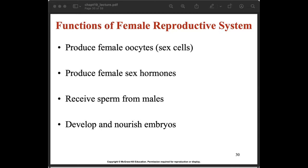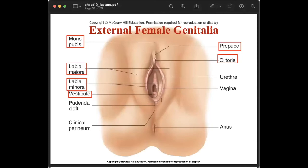The functions of the female reproductive system are: to produce female oocytes or sex cells, to produce female sex hormones, to receive sperm from males, and to develop and nourish embryos. Do not be alarmed by the anatomical images — these are normal things you will see even more of once you go on your hospital duties.